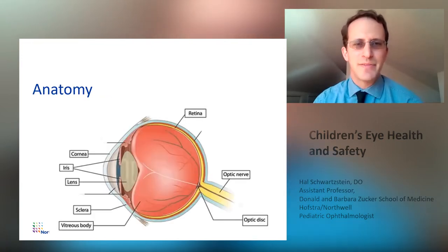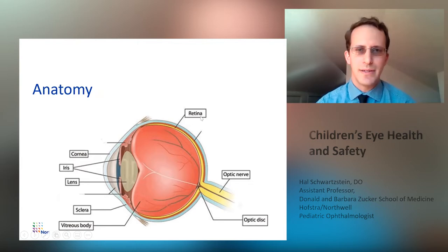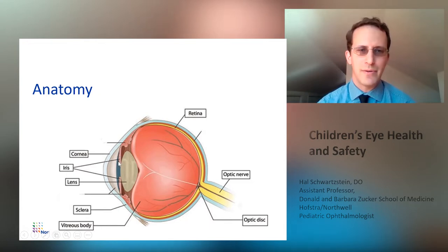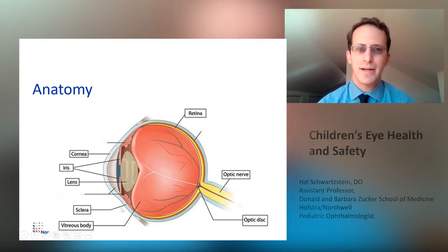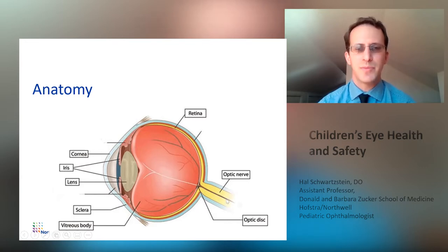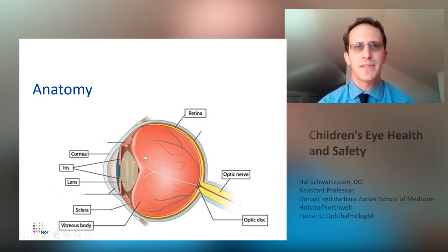Here's some anatomy of the eye. Starting from the front, you can see the cornea is the clear part of the eye. The iris is the part of your eye with color to it. The lens is behind that. The pupil is the dark spot in the center. The sclera is the white part of the eye. Overlying that is the conjunctiva. The back of the eye has the retina. There's the optic nerve, which connects to the brain. The optic disc is the part of the nerve that is visible when you look inside the eye. And the vitreous is the gel that fills the eye.